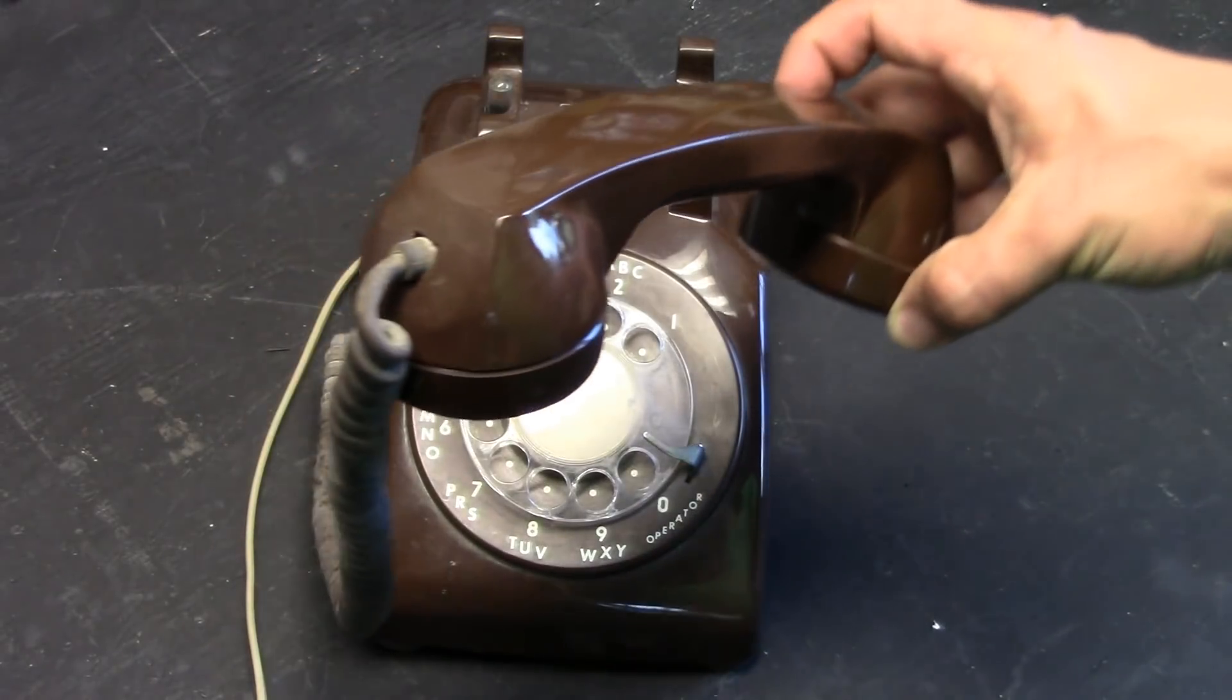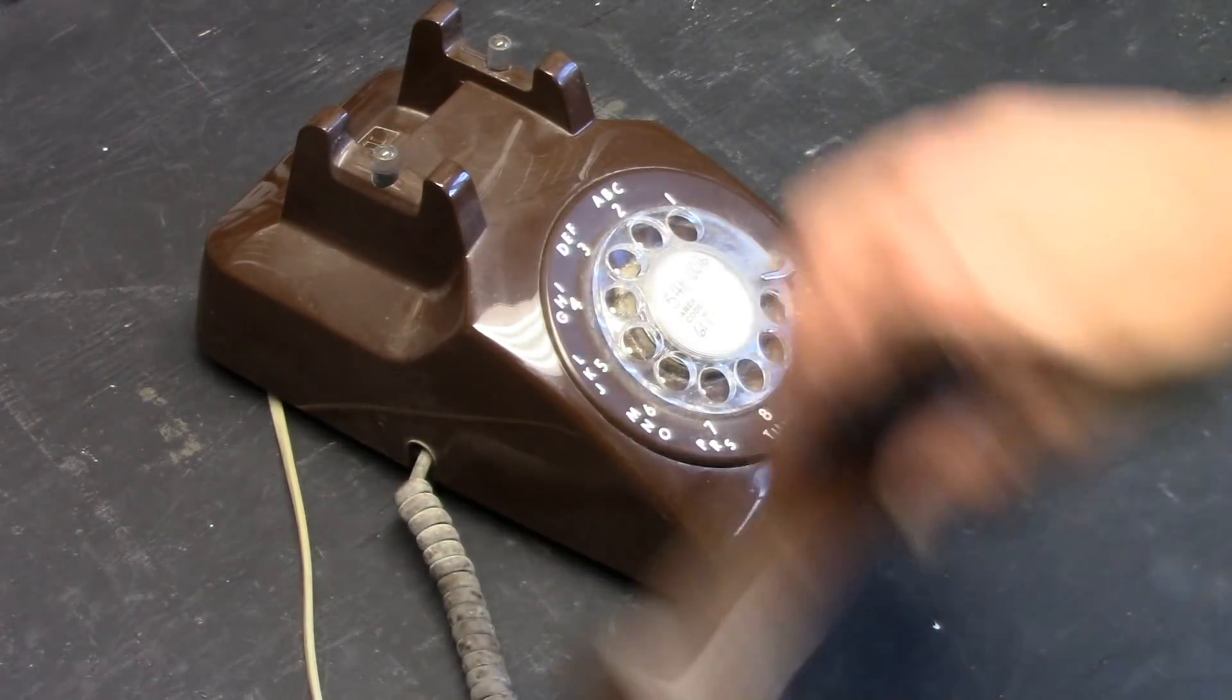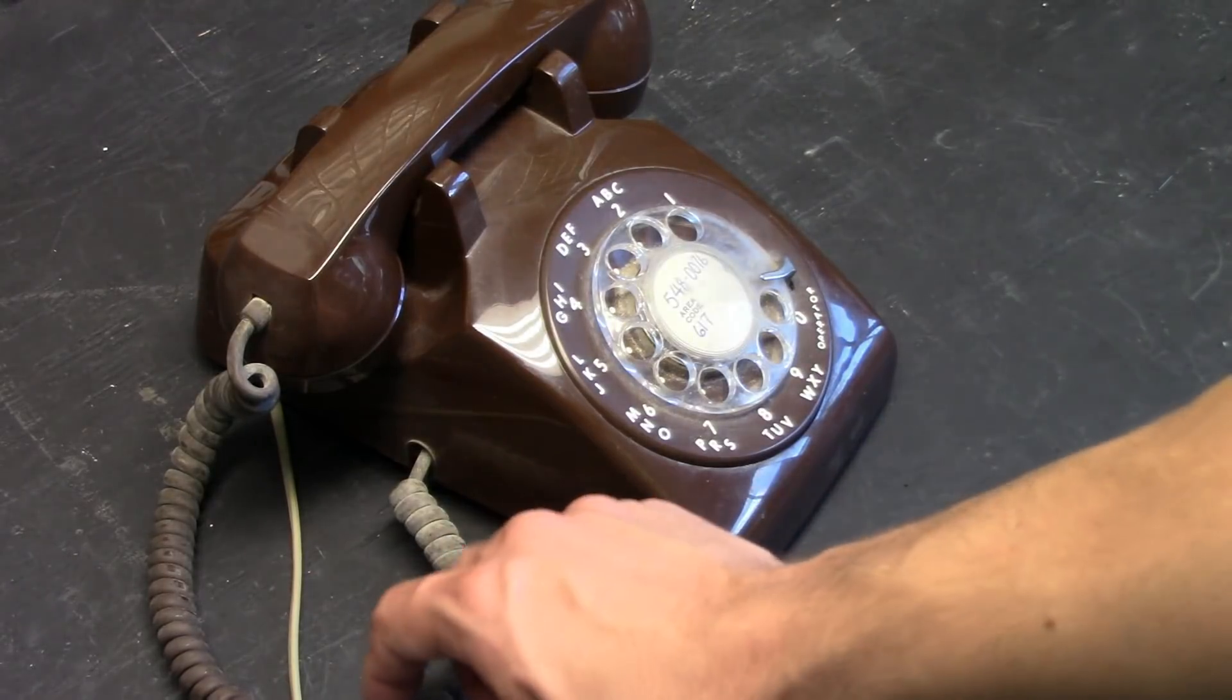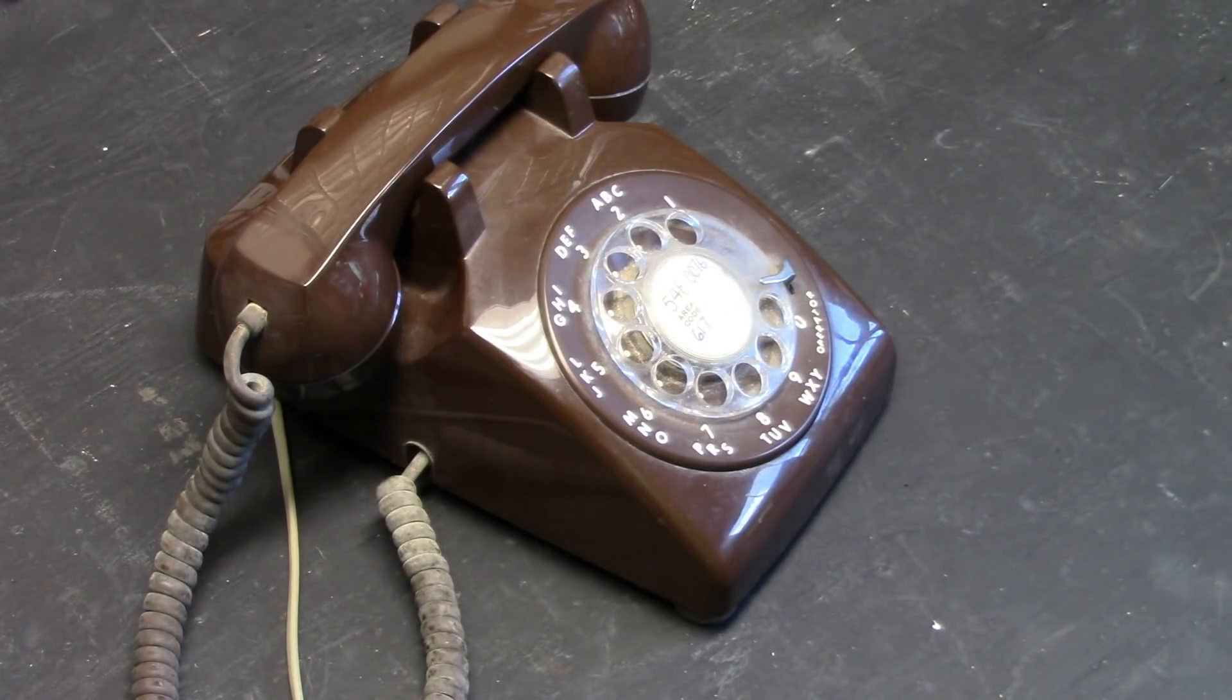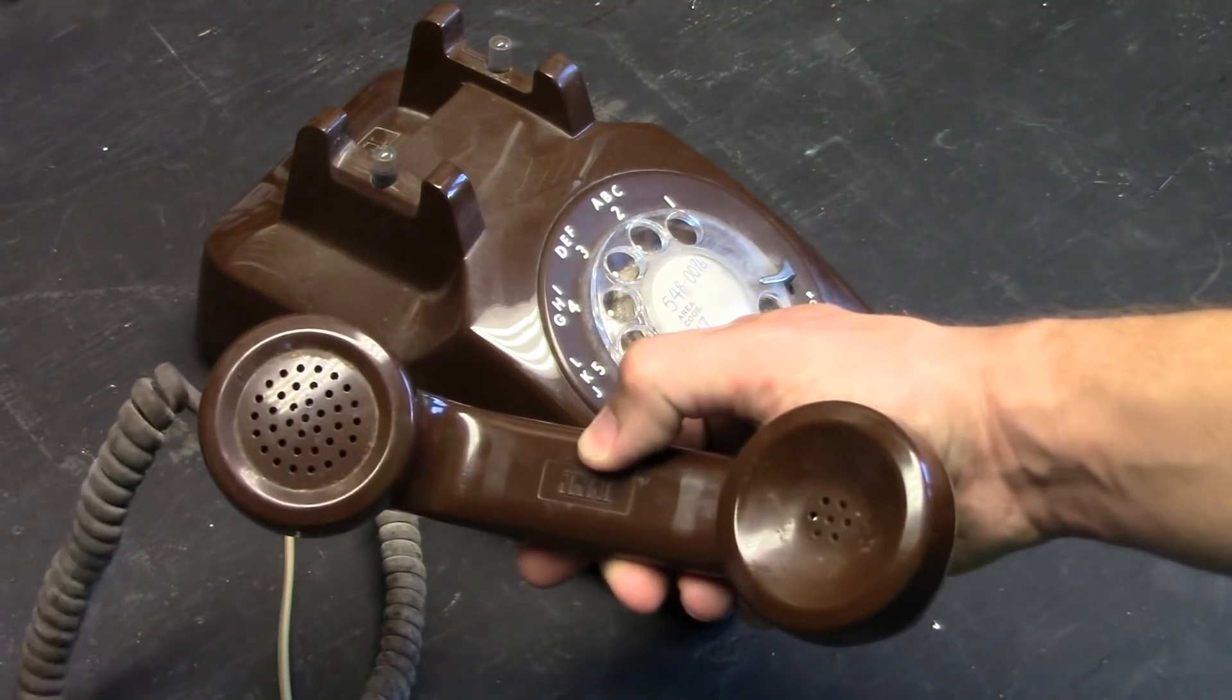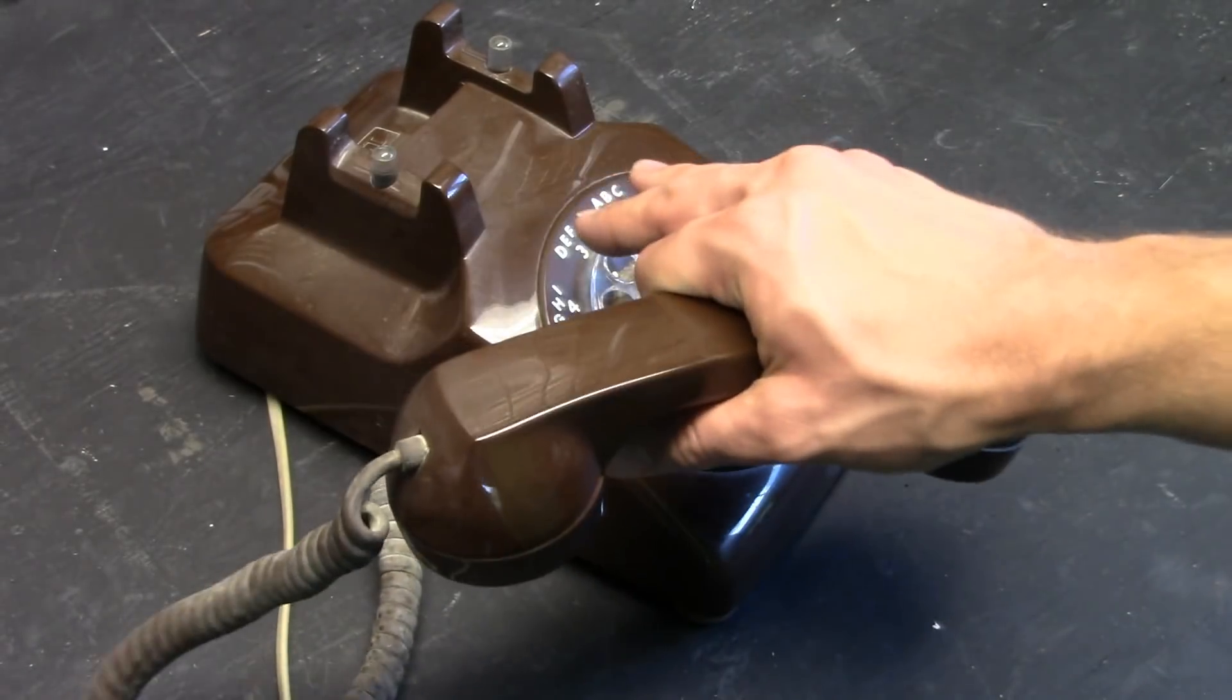Now, some handsets like this one are hardwired to the base of the telephone. So we will be disconnecting the handset from the base of this old telephone. But we'll do it in such a way that we can always connect the handset back so that this telephone can be used as a regular telephone in the future without destroying the old historical classic.